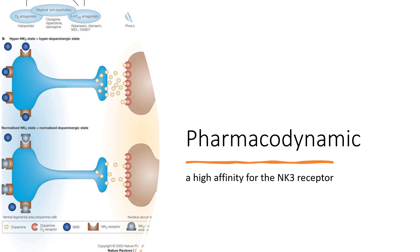Pharmacodynamics. Fezolinetant has a high affinity for the NK3 receptor (Ki value of 19.9 to 22.1 nmol/L), which is more than 450-fold higher than the binding affinity for NK1 or NK2 receptors. Treatment with Fezolinetant did not show any trends in sex hormones measured — follicle-stimulating hormone, testosterone, estrogen, and dehydroepiandrosterone sulfate — in menopausal women. A transient decrease of luteinizing hormone (LH) levels was observed at peak concentrations of Fezolinetant.